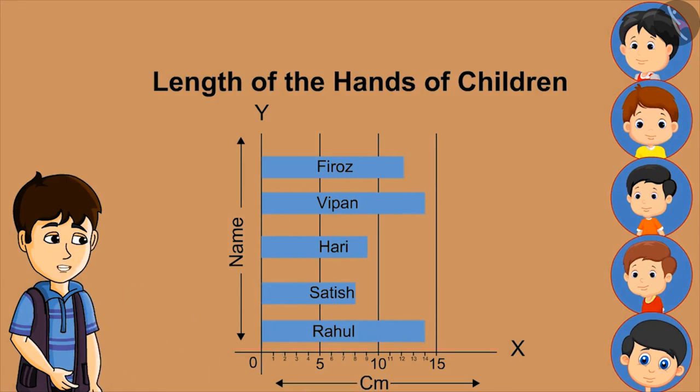By closely looking at this, can anyone tell me who has the longest hands? Rahul and Vipan. How long? 14 cm.